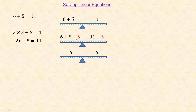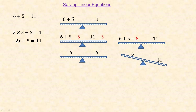If instead I only subtracted 5 from the left side — 6 plus 5 subtract 5 on the left and 11 still on the right — the left side becomes 6 and the right side is still 11, so it's no longer balanced. There's more on one side, so it's not balanced anymore. To keep it balanced you have to do the same thing to both sides.